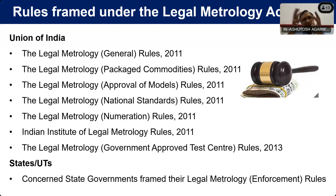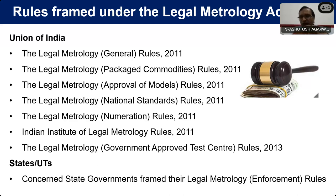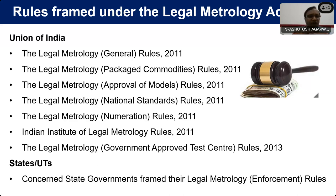In the Packaged Commodity Rules, we also have the provision of net content checking — how to check the net content in a packaged commodity. This net content checking is generally done at the premises of the manufacturer, packer, or importer, because it is difficult to check net content at the retail end. This is one of the most important rules.